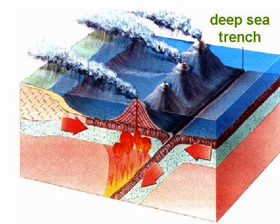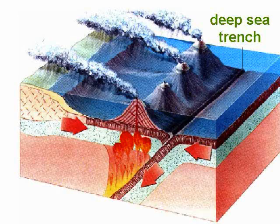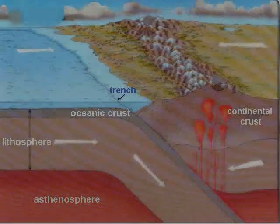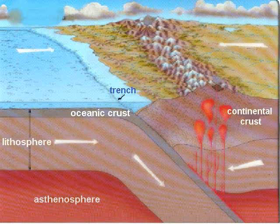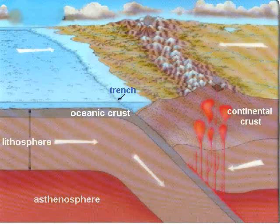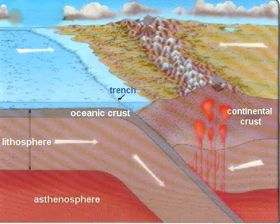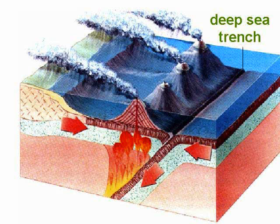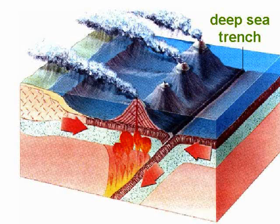In the subduction zone, we also see a trench forming here, and mountains being created here. Mountain building and crust destruction happen at convergent plate boundaries. The plate that is pushed down fuels volcanic activity, using the crust from subduction that eventually turns to magma to build new mountains.